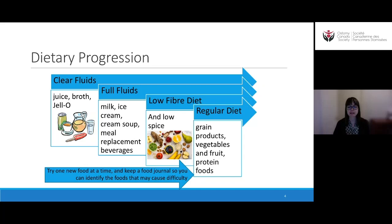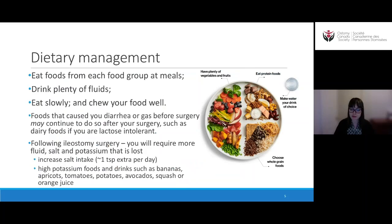If certain foods cause difficulty early on, try them again later because as your gut heals and adjusts, it can process things differently. For dietary management, we want to eat from all food groups at all meals ideally. Looking at Canada's food guide food plate model, you're aiming for about half your plate as fruits and vegetables, though as a person living with an ostomy that might not always be realistic. You do want to eat plenty of protein — meats, eggs, dairy, and vegetarian sources like soy, beans, legumes, nuts, and seeds.